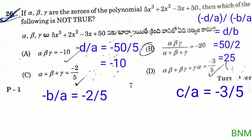We can observe that this is ax cubed plus bx squared plus cx plus d — this is the cubic polynomial. In the cubic polynomial, the product of the zeros is minus d by a, that means minus 50 by 5, which is minus 10. This is true. Then the sum of the zeros is minus b by a, which is minus 2 by 5. So option C is true.